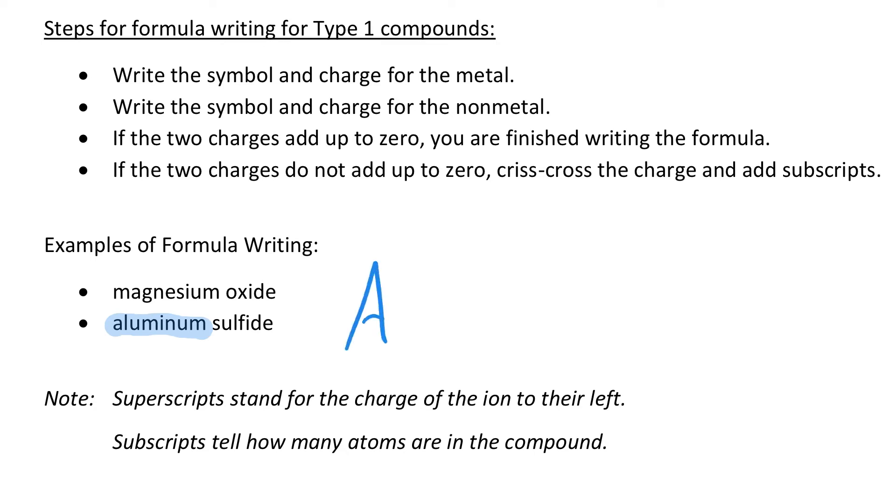So Al is the symbol and the charge is 3+ since it's in group 13. Sulfide is going to be our non-metal and I'm highlighting that in red. So I'll write that symbol and charge out in red as well. Sulfide is S and we have a 2- charge.